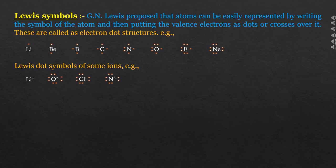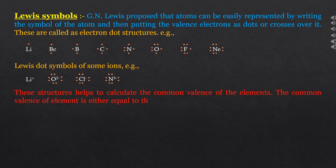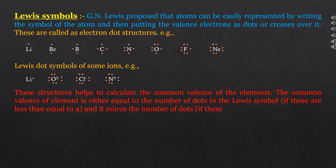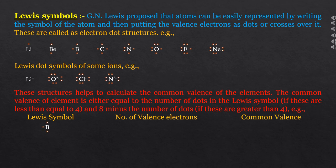In the same way, we can represent the nitride ion. Lewis symbols also help calculate the common valence of elements. The common valence of an element is either equal to the number of dots in the Lewis symbol if these are less than or equal to four, or equal to eight minus the number of dots if these are greater than four. For example, boron has three valence electrons (less than four), so its common valence is 3. Nitrogen has five valence electrons (greater than four), so its common valence is 8 – 5 = 3.